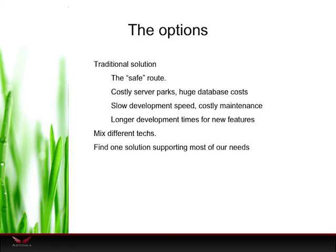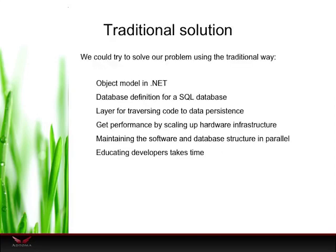We could also try a mix of technologies — one vendor best suited for ad deliveries, another for back-office functionality, and maybe a third for data mining and reporting. Or we could try to find one vendor that would suit all our needs. If we went the traditional route, we would implement an object model in .NET or Java, define the database schemas, make a translation layer between them, and try to get performance by scaling up hardware. In each and every upgrade and patch, we'd need to upgrade both the database and application code in parallel. Educating developers would take more time, making scaling the development department much harder.